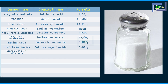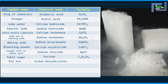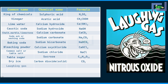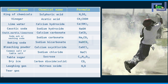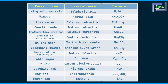Common salt or table salt is sodium chloride with the formula NaCl. Table sugar is sucrose, with the formula C12H22O11. Dry ice is carbon dioxide in solid form, with the formula CO2. Laughing gas is nitrous oxide, N2O — if you smell this gas, you will always laugh. Tear gas, which can make you cry, is chloropicrin with the formula CCl3NO2. Marsh gas is methane, with the formula CH4. These are some important compound formulas that we use in our daily life.